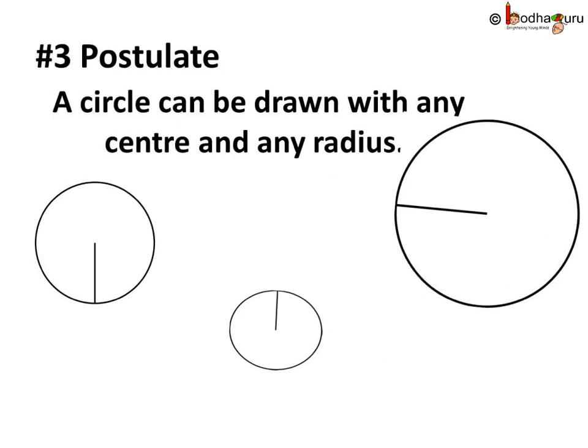What do you need to draw a circle? Exactly, only its radius. A circle can be drawn with any center and any radius. Means if you are given any point as a center and any radius, it is enough for drawing a circle. So this was a postulate that a circle can be drawn with any center and any radius.